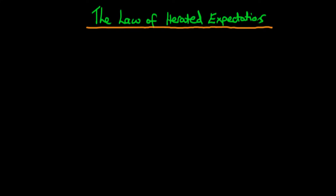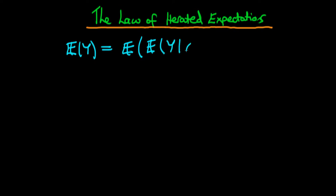In this video, I want to provide an introduction to the law of iterated expectations, and I also hope to provide some intuition behind the math. Mathematically, what the law of iterated expectation says is that the unconditional expectation of a random variable y is equal to the expected value of the expected value of y given some other random variable x. That's the mathematical statement of the law of iterated expectations.